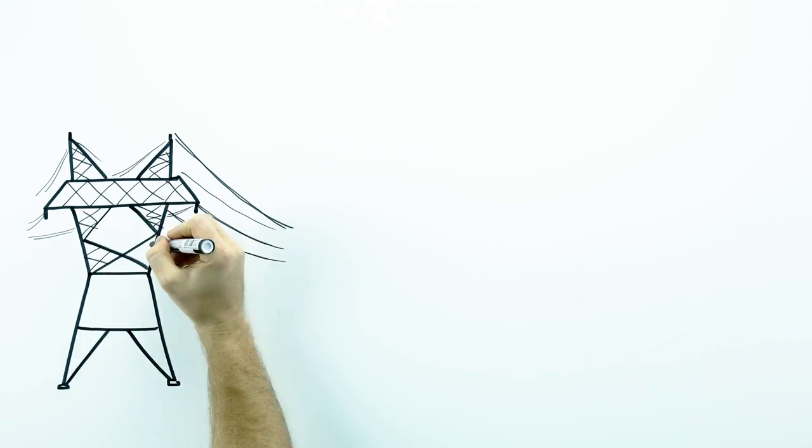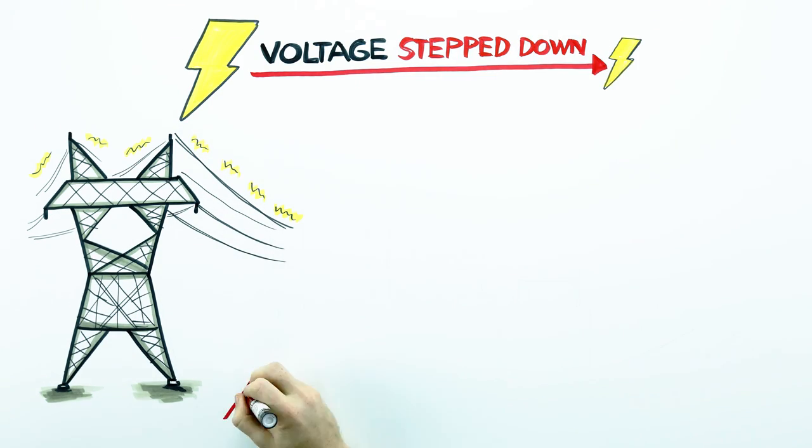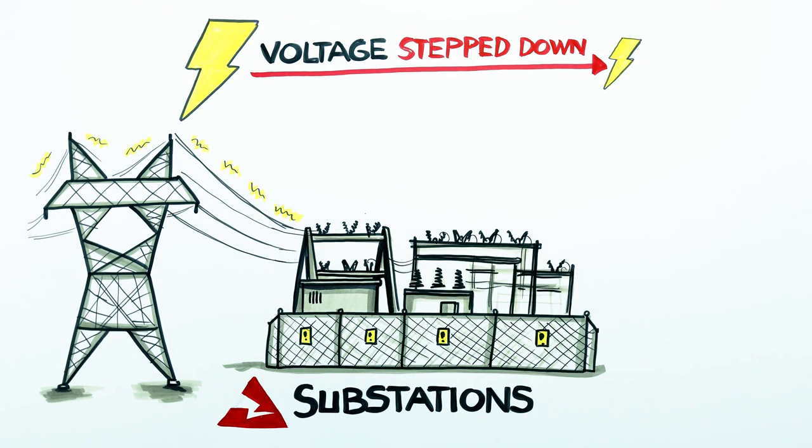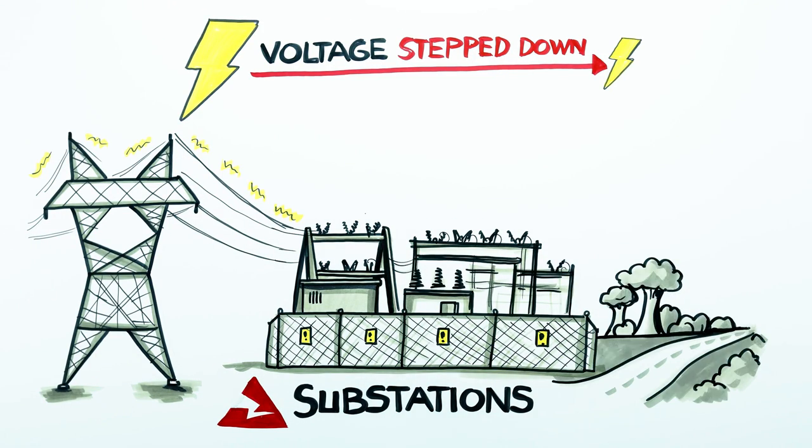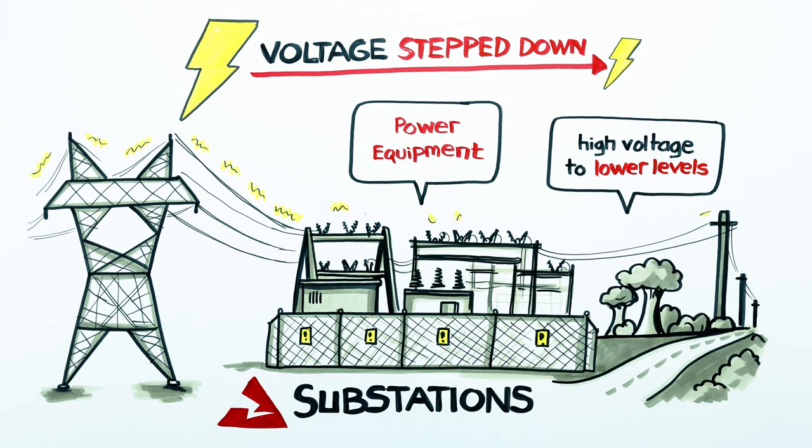However, before we can all use this power, it must be stepped down to a lower, safer level. This happens at substations, which you've definitely seen while driving along roads in your community. These fenced areas contain a lot of power equipment that is used to step down high voltage to much lower levels.